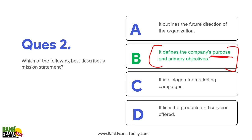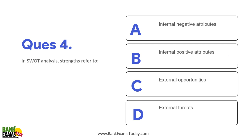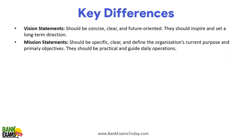Which of the following best describes a mission statement? It defines the company's purpose and its primary objectives. If we are talking about future direction, that's the vision — vision is aspirational and future-oriented. The mission focuses on the present. To summarize the difference: a vision statement is future-oriented and aspirational, sets a long-term direction, while a mission statement is practical in nature and guides daily operations.